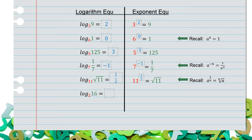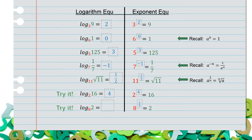Log base 2 of 16 equals what? This is your triad problem. We understand that to be 2 raised to some power equals 16, so that is a power of 4. Next, log base 8 of 2 equals what? That would be 8 raised to some power equals 2. The cubed root of 8 equals 2, and because we're talking about a cubed root, the exponent would be one-third.